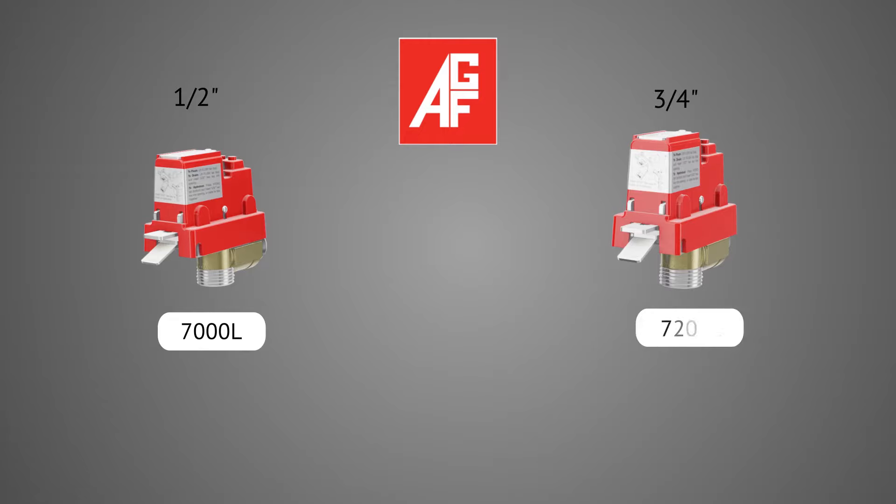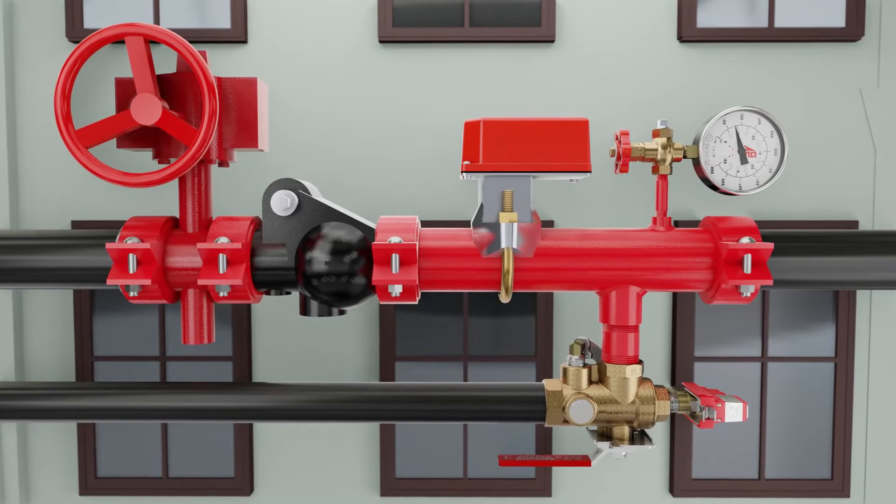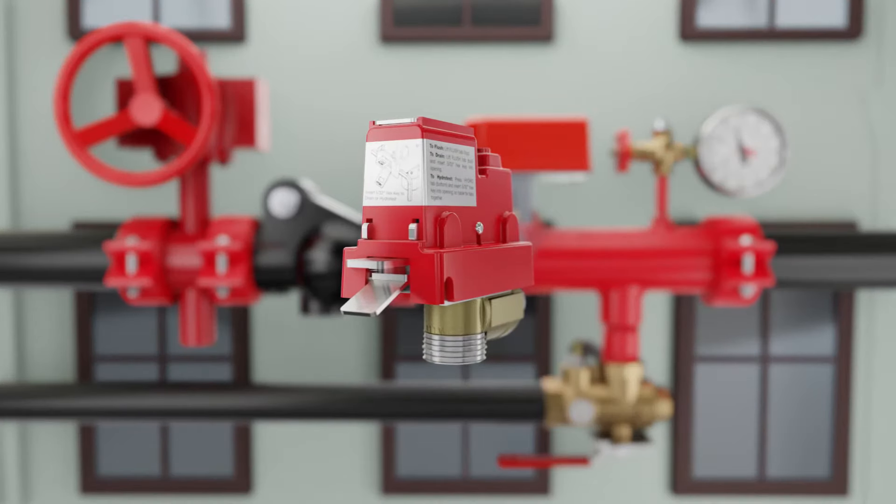AGF's 1/2-inch Model 7000L and 3/4-inch Model 7200L are UL-listed and FM-approved pressure relief valves that can be installed prior to hydrostatic testing and temporarily locked closed to perform system integrity testing.